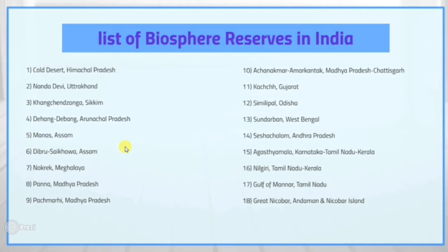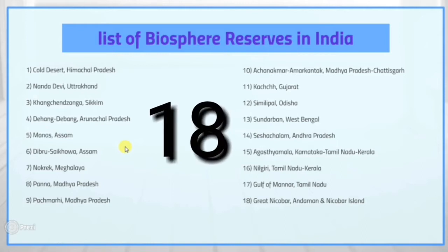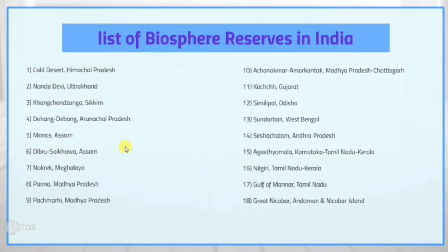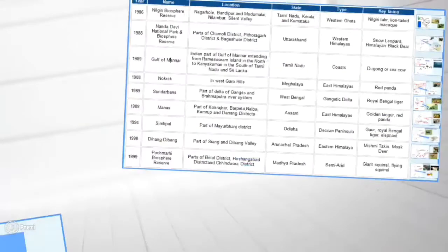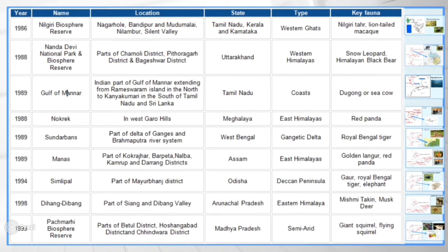India has a total of 18 biosphere reserves, out of which 10 come under UNESCO's Man and Biosphere (MAB) reserve program. We will discuss all of them one by one, learning about their key fauna. Let's start with the first biosphere reserve — from the table shown, you only need to remember the name, location (state), and key fauna.